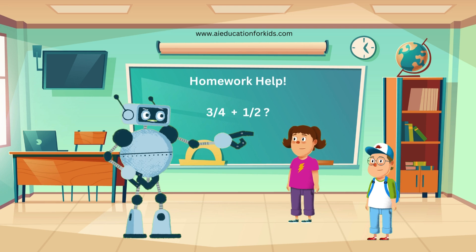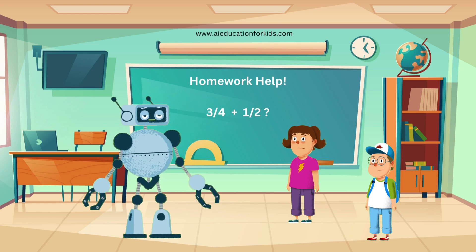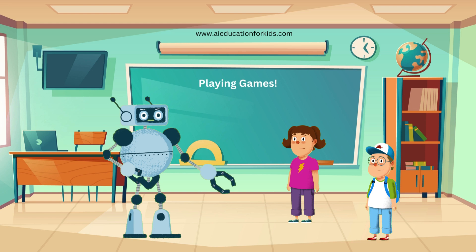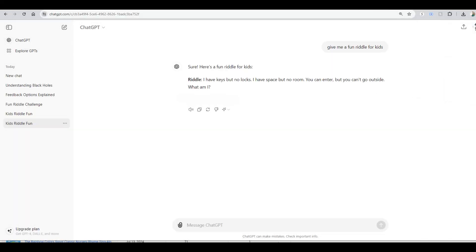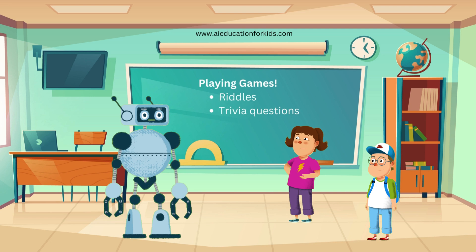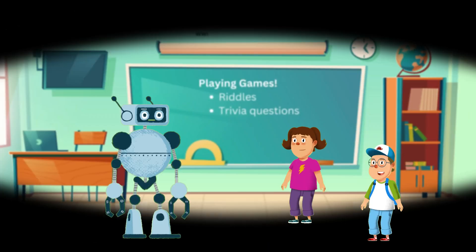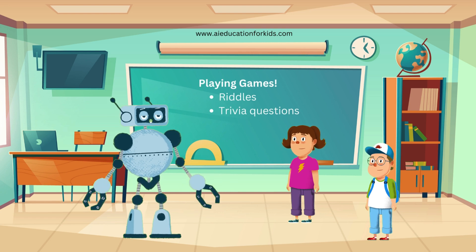ChadGPT can help with all subjects, including math, science, and English — it's like having a personal tutor available anytime. Now let's have some fun and play a game with ChadGPT. Ethan, do you like riddles? I love riddles. Great, let's ask ChadGPT to give us a riddle. Here is the riddle: I have keys but no locks. I have space but no room. You can enter, but you can't go outside. What am I? Can anyone guess? Hmm, I know — a really bad magician's hat? Let's see what ChadGPT has to say. It's a keyboard! That was fun. ChadGPT has many riddles, trivia questions, and games to keep you entertained and learning.